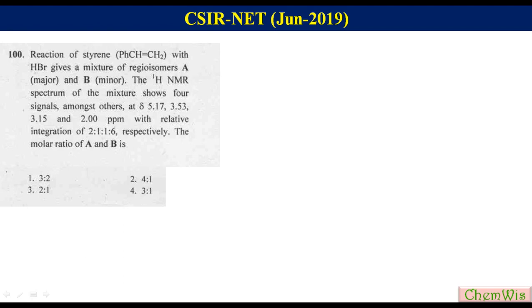Question number 100. In this we have to find the molar ratio of two products A and B formed after addition of HBr to styrene. The ratio of signal intensity for four signals is given.